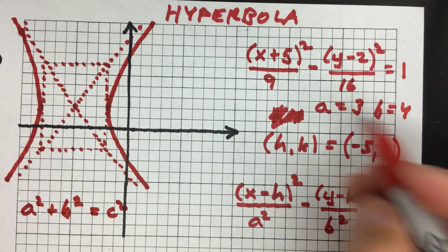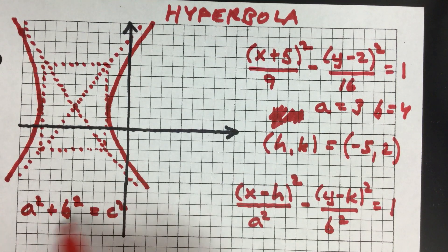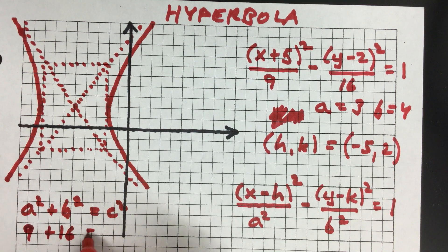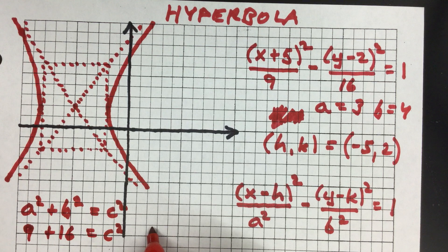I picked some friendly numbers here. We have a equals 3 and b equals 4, so c is then going to be 5, right? Because you have 9 plus 16 equals c squared. So c is going to be square root of 25, which is 5.